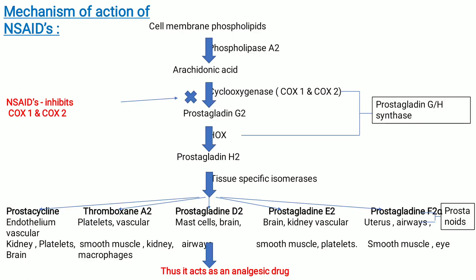These prostanoids cause pain as they reach their specific sites. Prostacyclin acts in endothelium, kidney, platelets, and brain. Thromboxane A2 acts in platelets, vascular smooth muscle, kidney, and macrophages. Prostaglandin D2 acts in mast cells, brain, and airways. Prostaglandin E2 acts in brain, kidney, vascular smooth muscles, and platelets. And prostaglandin F2-alpha acts in uterus, airways, vascular smooth muscles, and eye.